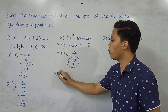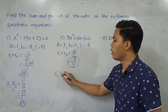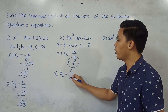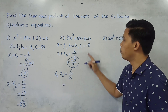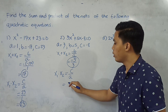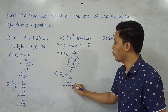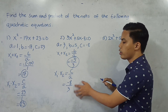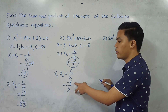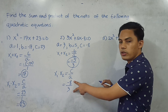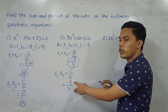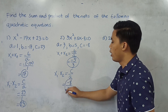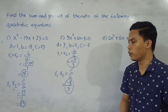For the product: x sub 1 times x sub 2 equals C over A, so we will have negative 4 over 3. Since they are not in lowest terms, this is the final answer. You can also express this as a mixed fraction, but negative 4 over 3 as an improper fraction is also acceptable.